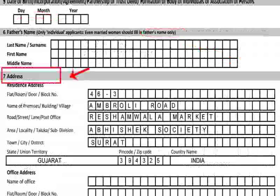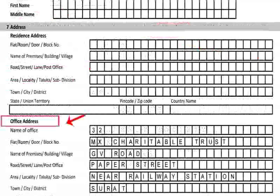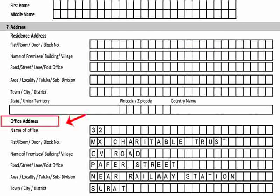Item 7 asks for your address. Residential address should be filled only by individuals, HUF, AOP, BOI or AJP. Individuals should give their office address if they have a source of income, such as business or profession. In case of a firm, LLP, company, local authority or trust, complete office address is mandatory.